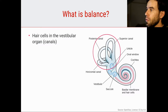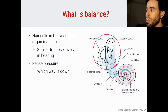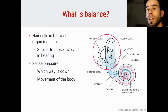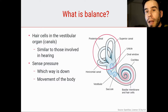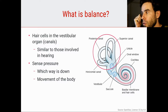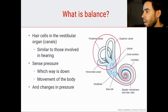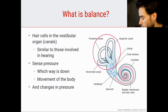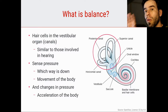Hair cells in these vestibular organs are very similar to the ones involved in hearing. They sense pressure, so they can detect which way is down and the movement of the body simply by the pull downwards, which allows you to tell where down is. Changes in pressure from acceleration allow you to feel the acceleration of the body. There are three canals oriented in slightly different ways, which makes us sensitive to acceleration and movement in different directions.